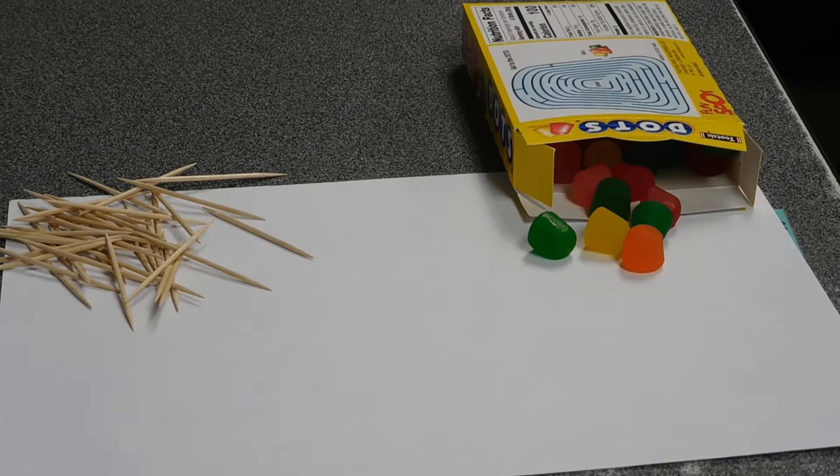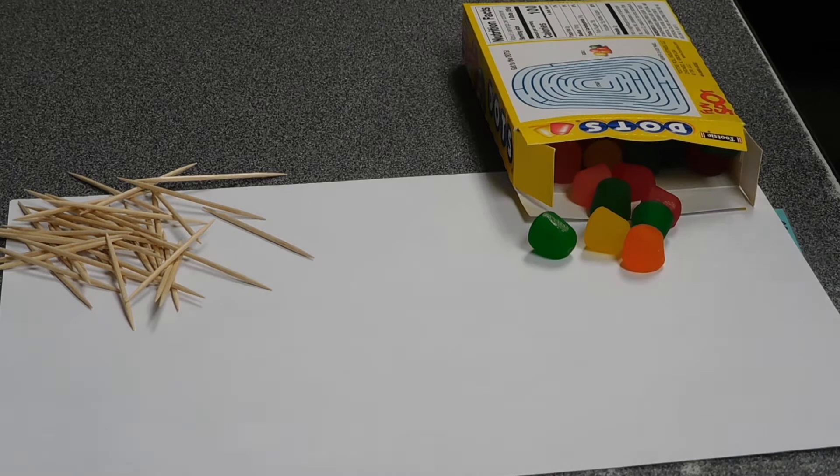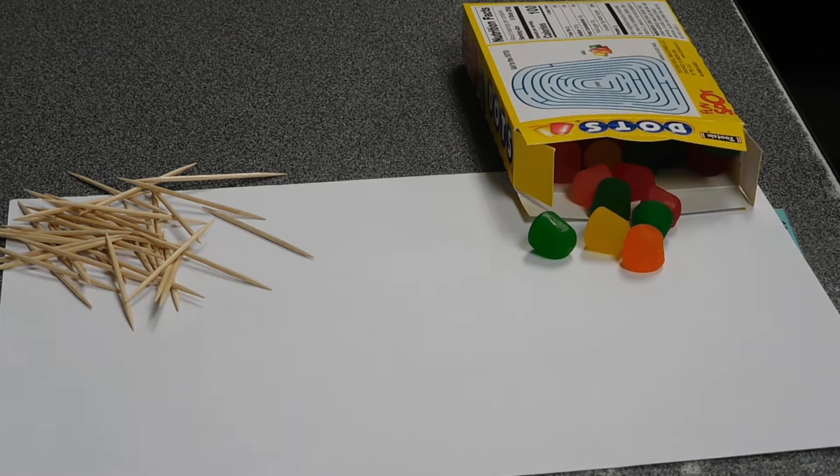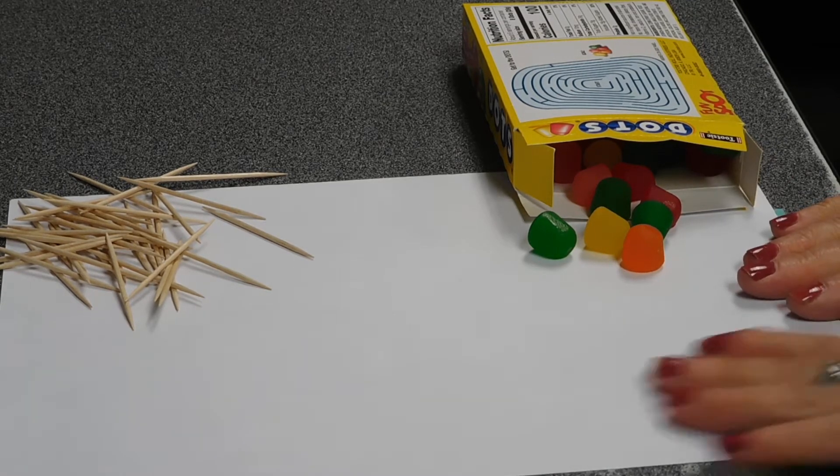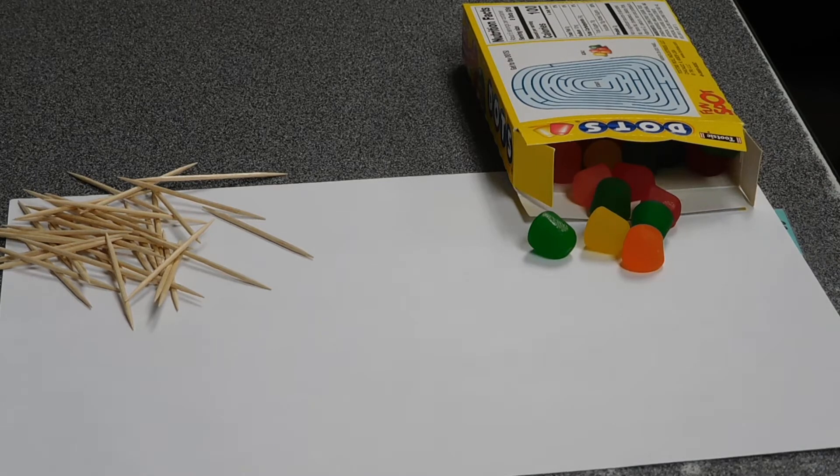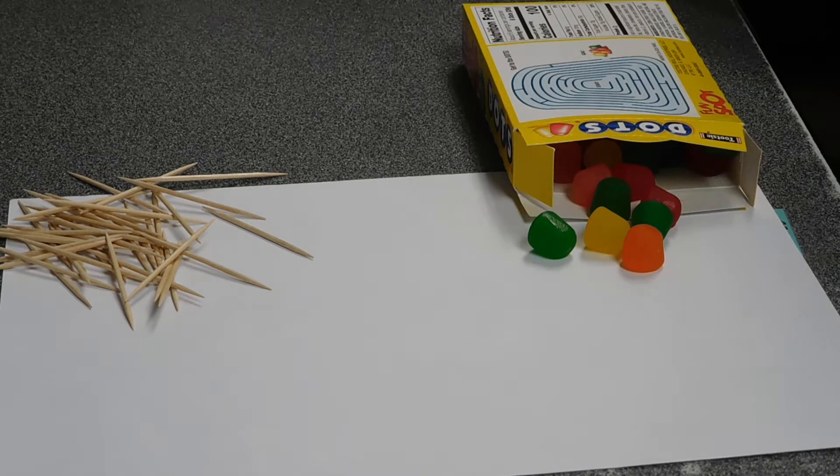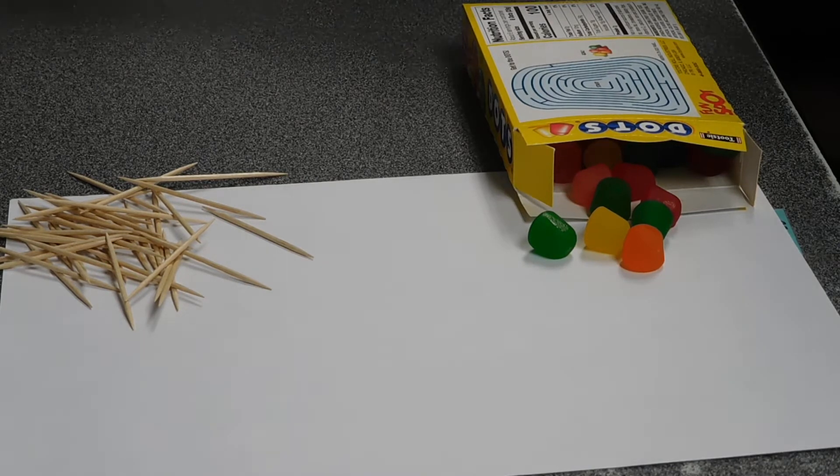We're going to use two materials: toothpicks and gumdrops. So when you're done with the project, if you want to eat your dome, you pretty much can. I'm going to pause for a minute to get everything set up. Because I am not a fan of creating messes on counters with sticky candy, I have laid down a piece of paper that we can work on.